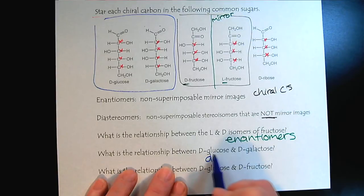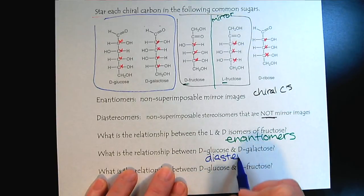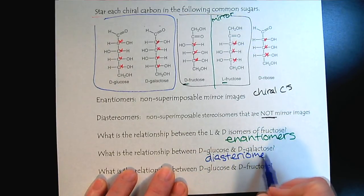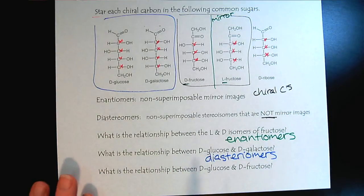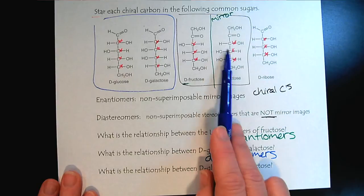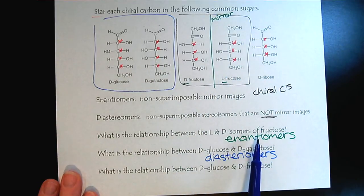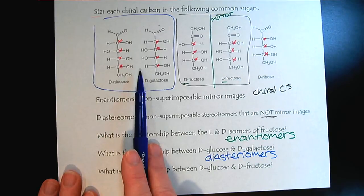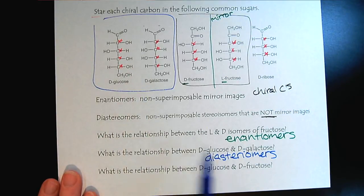So glucose and galactose, they're an example of diastereomers, where we have more than one chiral carbon. So if they're all reversed, if they're all mirror images, we say they're enantiomers. But if only some of them are mirror images, and some of them are identical, we call them diastereomers. So this is two types of stereoisomers.